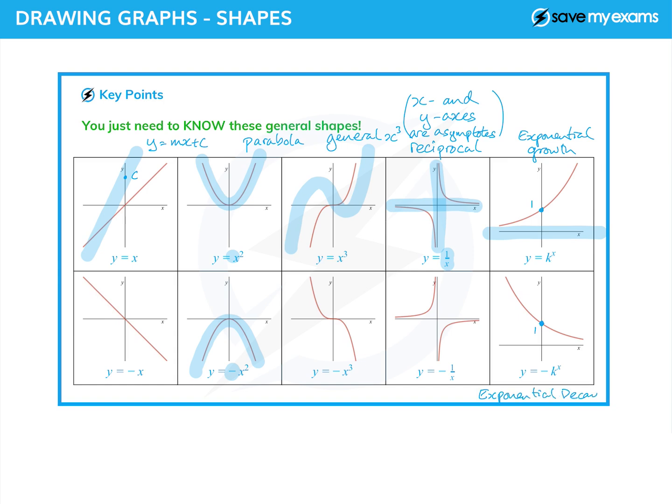And again in exponential decay, particularly starting at x equals zero there, it gets smaller and smaller and smaller but never reaches zero. What you need to do is you need to go away and do lots of questions on those, but you really also need to know the shapes of these graphs.